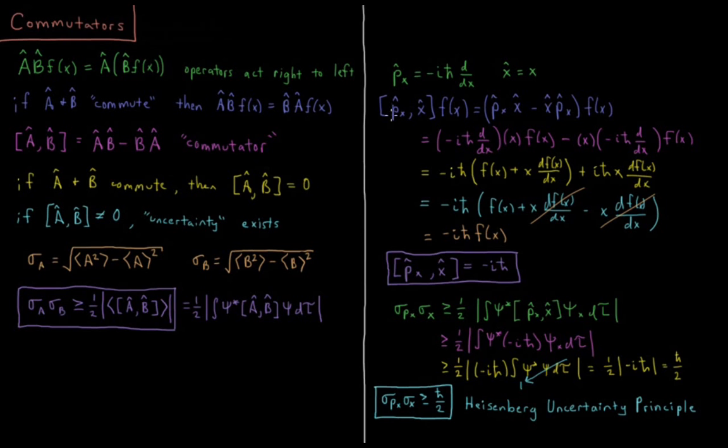Okay, so the commutator of px is going to be px minus xp acting on f of x. So this is going to be substituting each of those operators. Minus i h bar first derivative with respect to x of x times f of x, minus x times minus i h bar first derivative with respect to x times f of x.